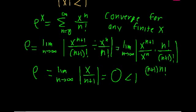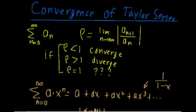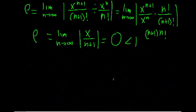Welcome back. Let's continue trying to see if there's any criteria for convergence for our Taylor series expansions. We're going to continue doing that with the ratio test. If we have a series in terms of an index n, we take the ratio of the n+1 term over the n term and compare this value to see if it converges or diverges and if there's any criteria for that.